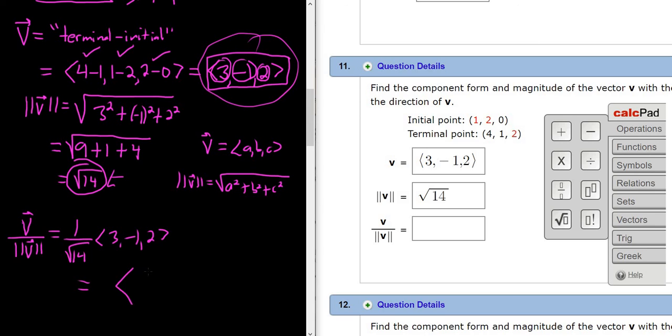But let's go ahead and just distribute it through. So 3 over the square root of 14. Negative 1 over the square root of 14. And then 2 over the square root of 14. So this vector is just like the vector v. It's pointing in the same direction except its length is 1. In other words, this vector is called a unit vector.